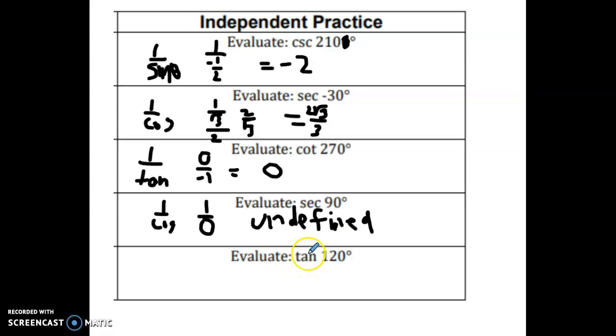And last, the tangent of 120, you find 120, the coordinates are negative 1 half and square root of 3 over 2. I'm going to put the y coordinate on top, and then I'm going to put the x coordinate on the bottom. And I'm going to invert and multiply. The 2's cancel out. I end up with negative square root of 3 over 1, or just negative square root of 3.